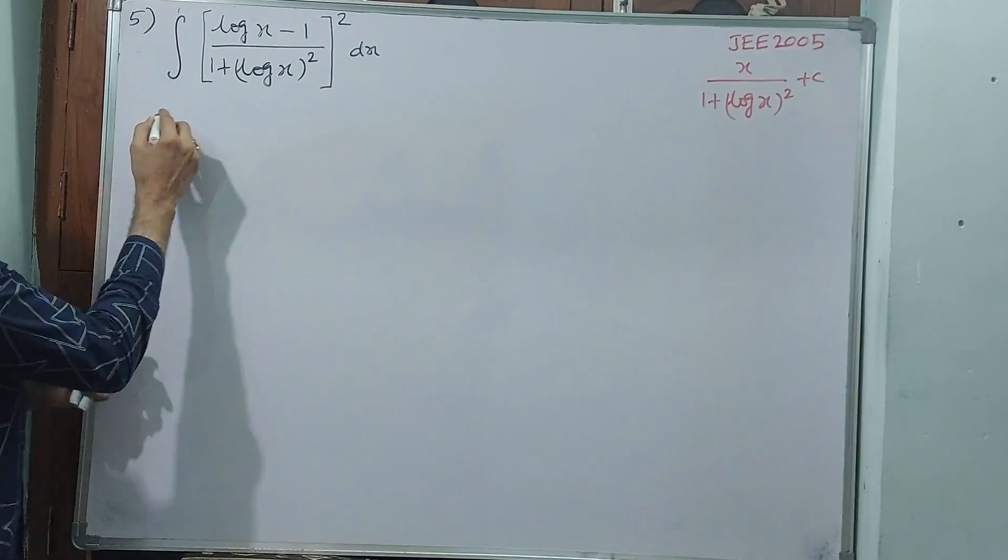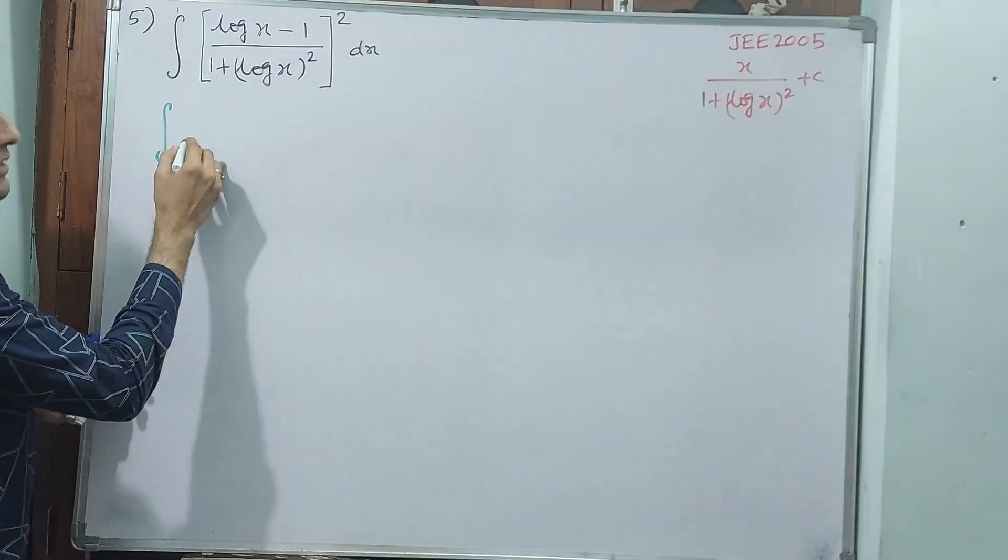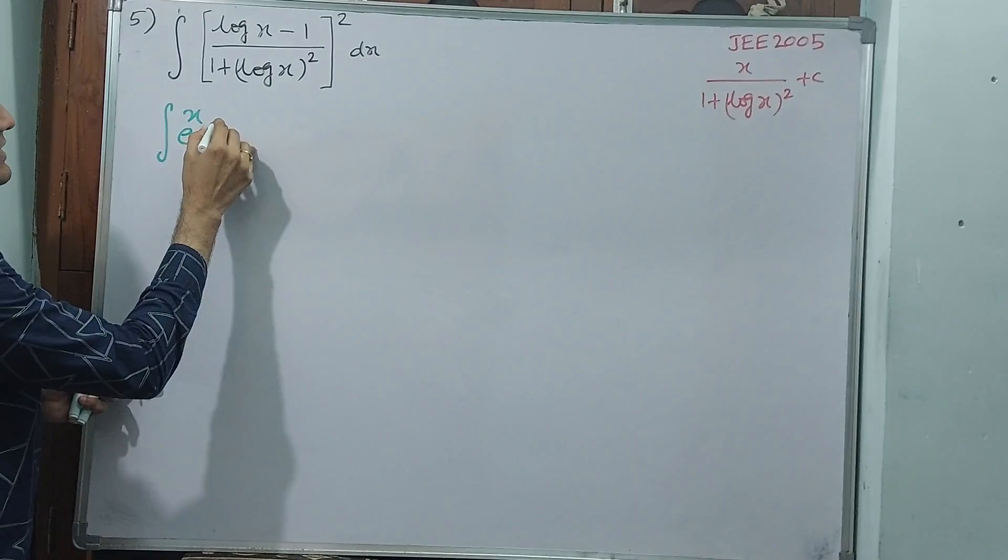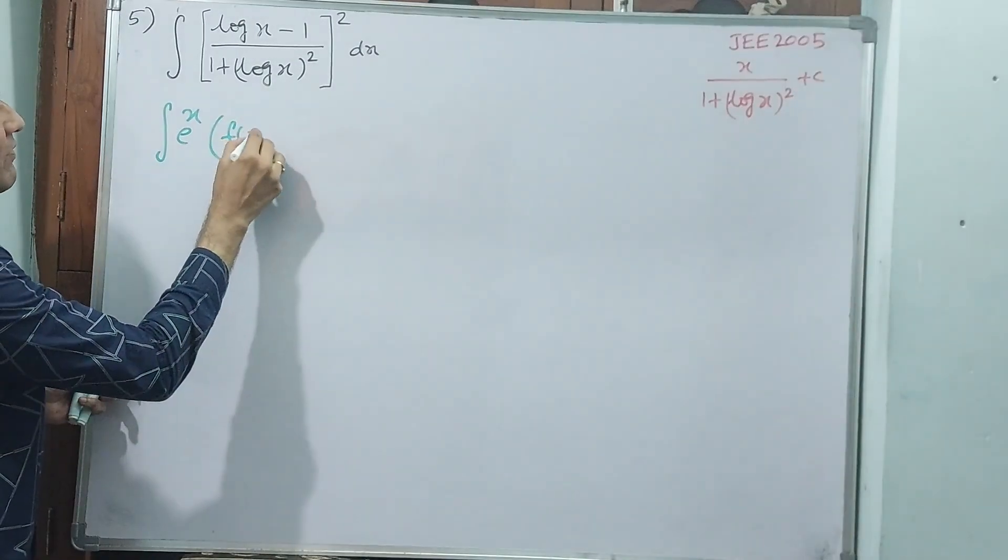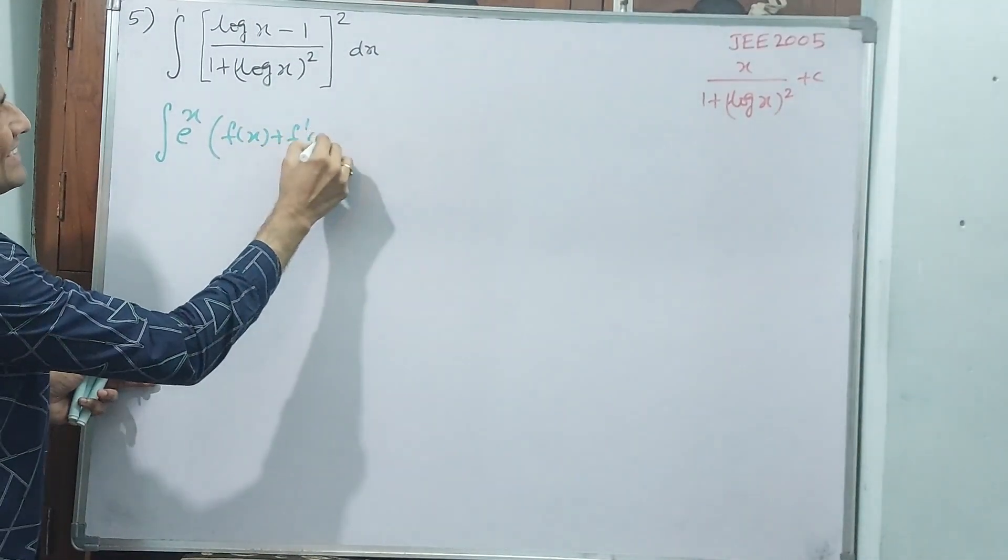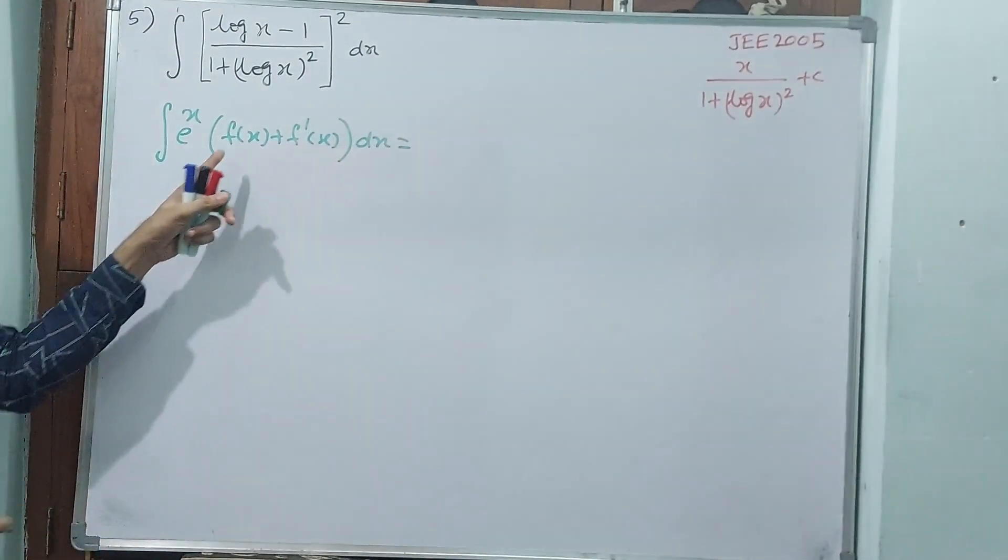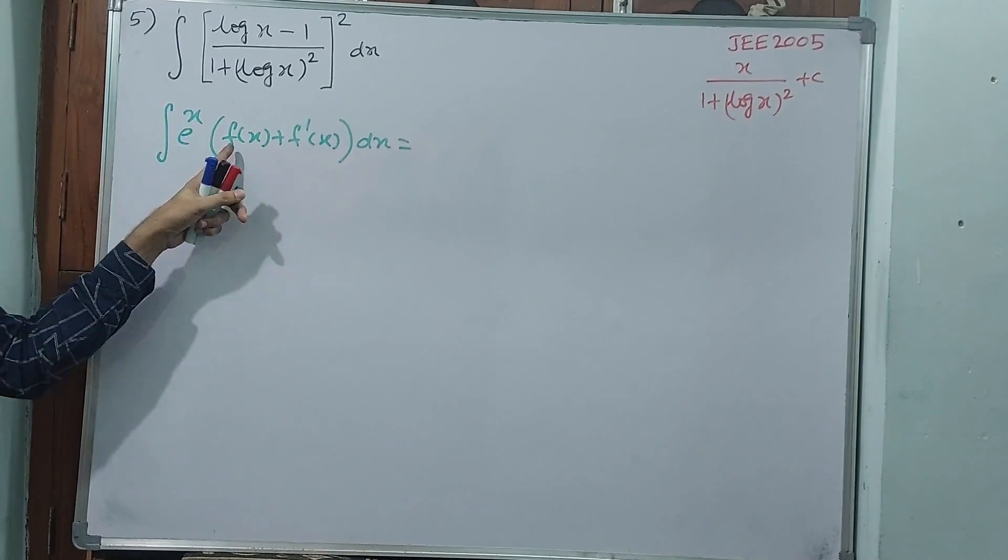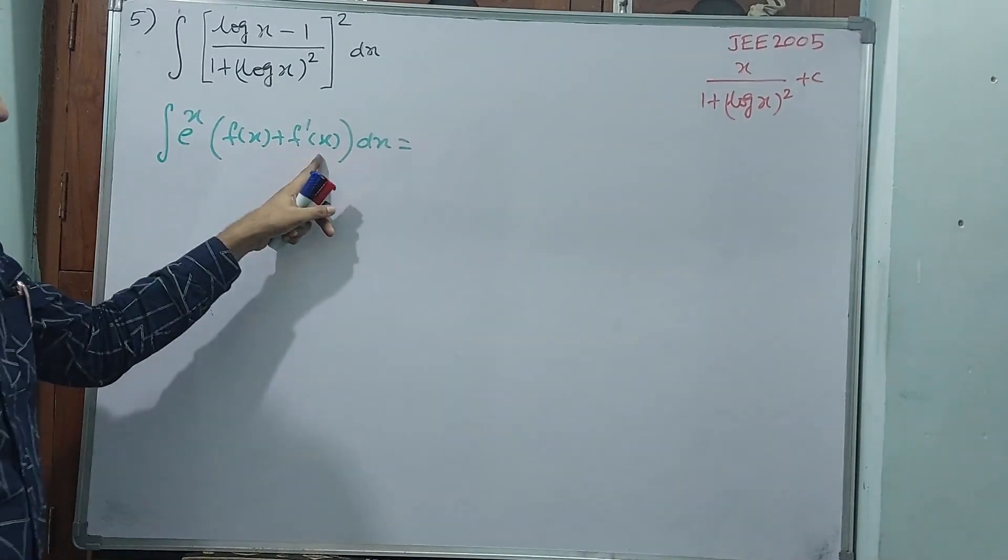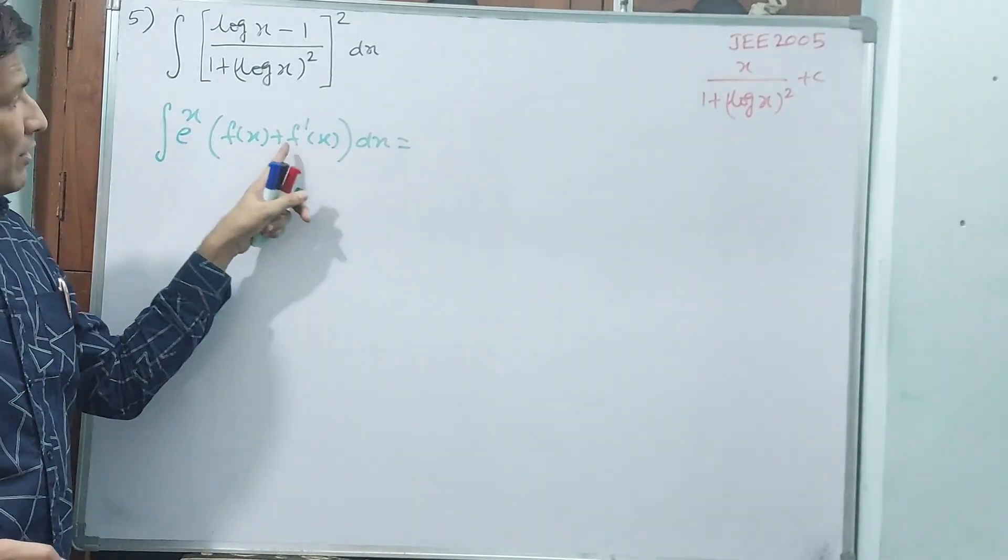One formula I am writing. Integral e power x into f of x plus f dash x dx. e power x should be multiplied with both f of x and f dash x derivation, plus should be there.